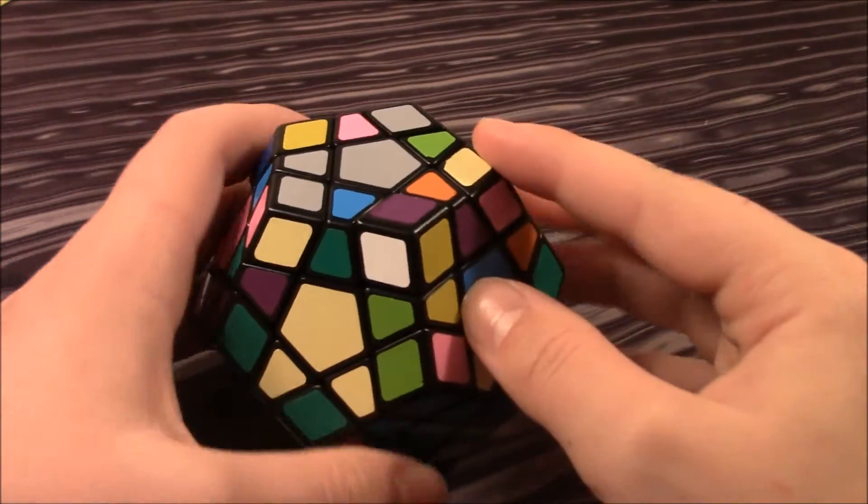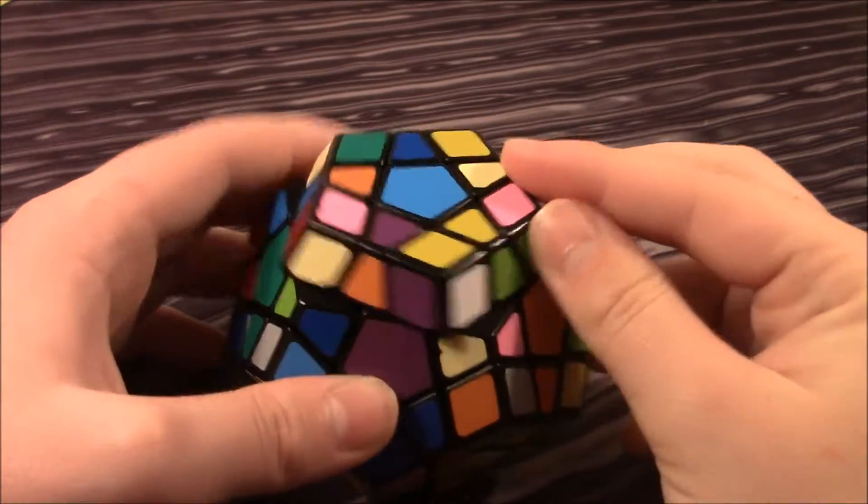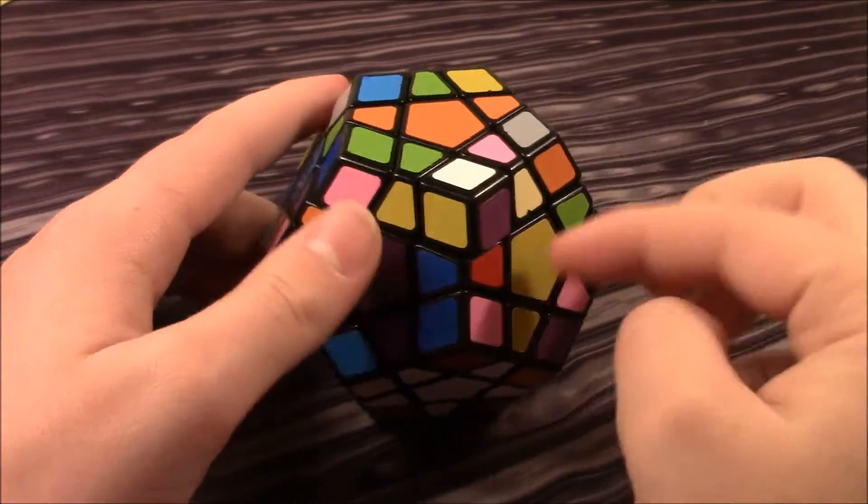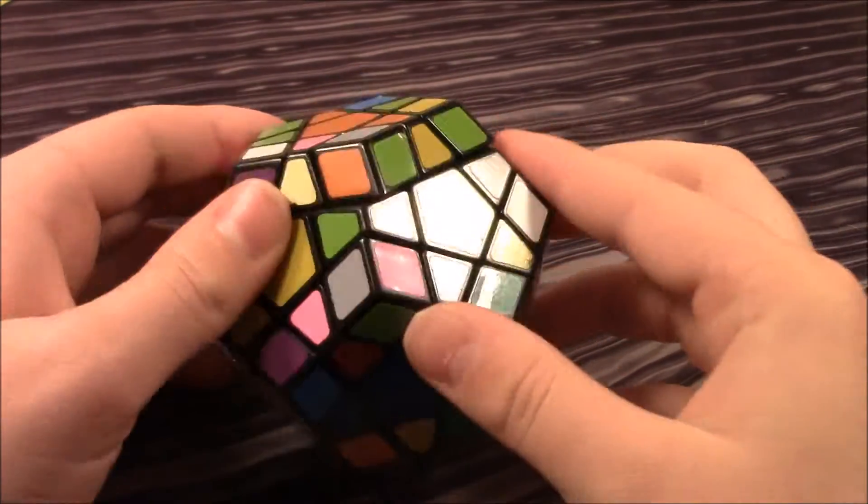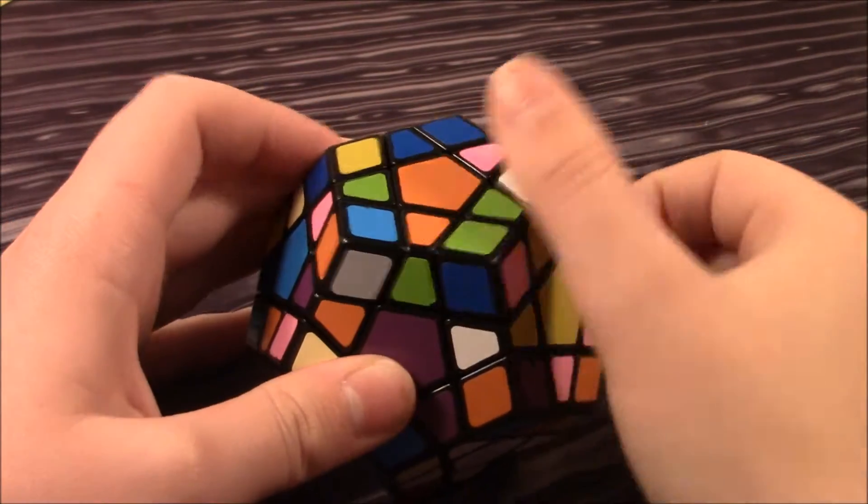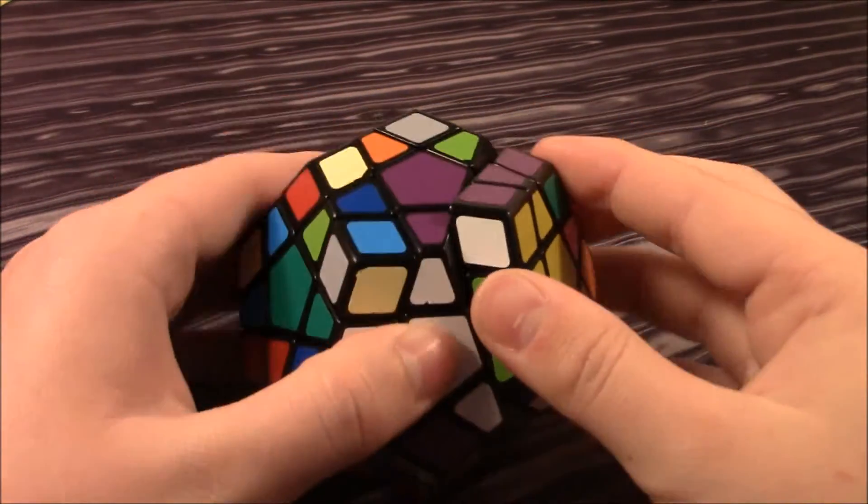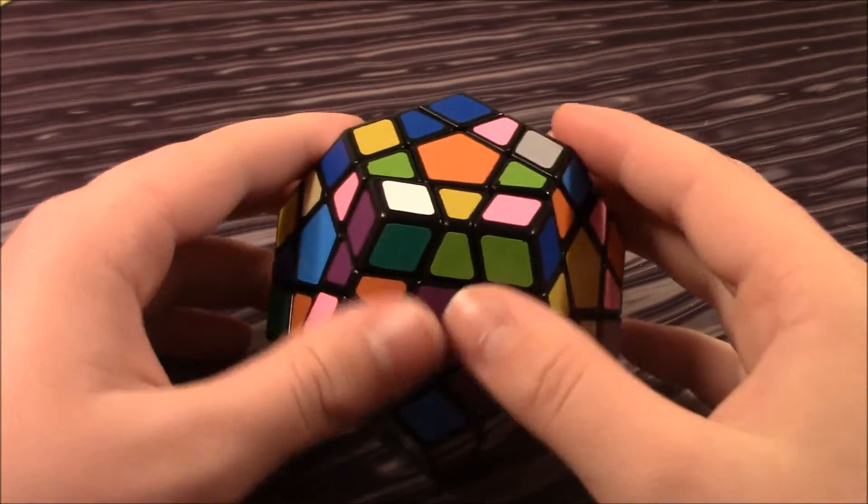So I see this corner here first, so I'll just put it above where it needs to go. And here's the edge. Let me just pair it up. And then you can sledgehammer it in there. There's the first F2L pair.